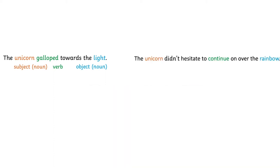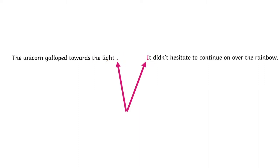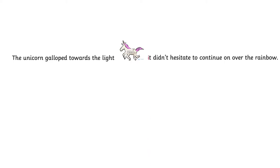Here we have another simple sentence. We'll link both together using a conjunction. We'll remove the full stop from sentence one, change the noun to a pronoun with the word 'it,' and reduce 'I' to a lowercase letter as we combine with the conjunction 'and.' And now we have a compound sentence — one sentence made up of two previously simple sentences.